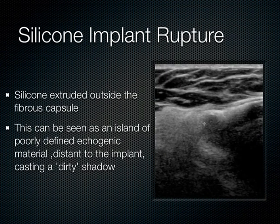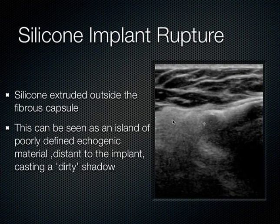When rupture does occur with a silicone implant, the silicone extrudes outside the fibrous capsule. This appears as poorly defined echogenic material distant to the implant with a dirty or difficult-to-demarcate shadow — a sign of silicone implant rupture. If it's a saline implant rupture, it appears as anechoic free fluid seen in different tissue layers.